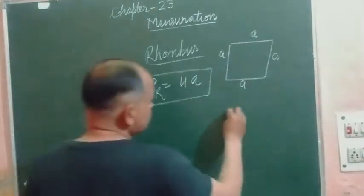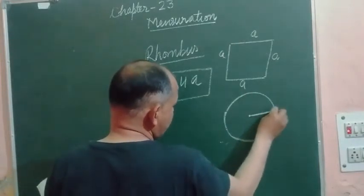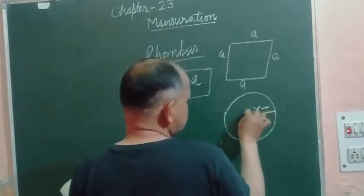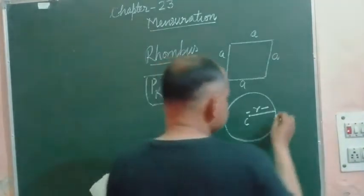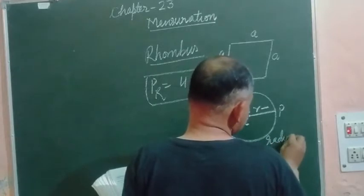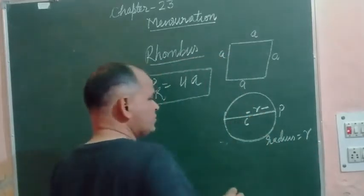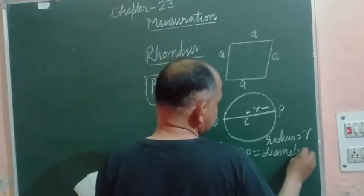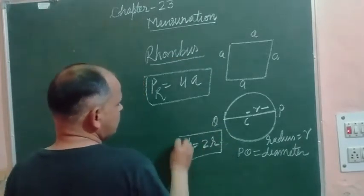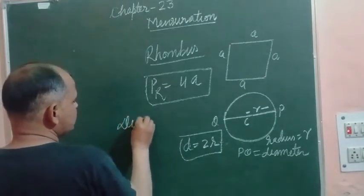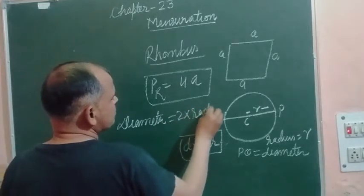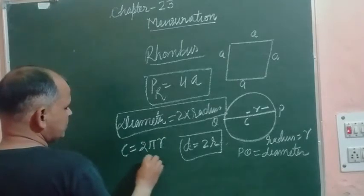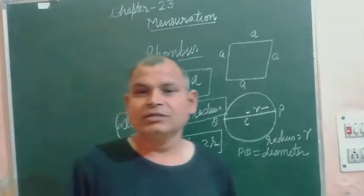Now we move towards the circle. A circle is a path or locus of points which are at equal distance from a fixed point. This fixed point is known as the center. The distance from the center to the circumference is the radius R. The line passing through the center has length known as diameter D, where D equals 2 times R. So diameter equals 2 times radius. And the circumference C equals 2 pi R, where pi is a constant whose value is taken as 22 over 7.